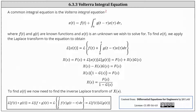Welcome to a lesson on the Volterra integral equation. A common integral equation is the Volterra integral equation, which is x of t equals f of t plus the integral from zero to t of g of the quantity t minus tau times x of tau d tau, where f of t and g of t are known functions, and x of t is an unknown function we wish to solve for.